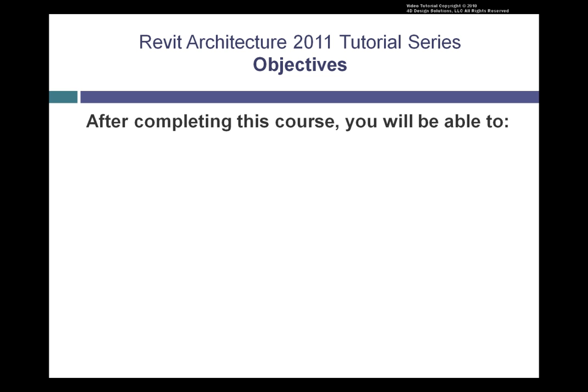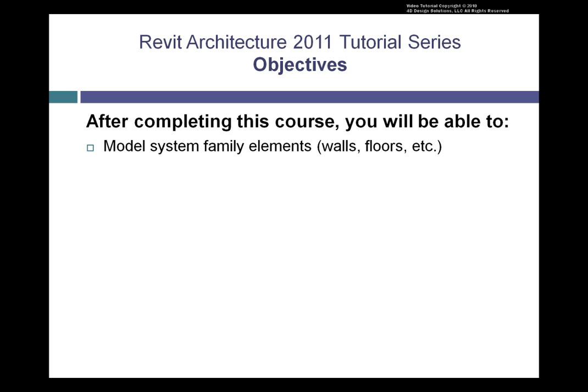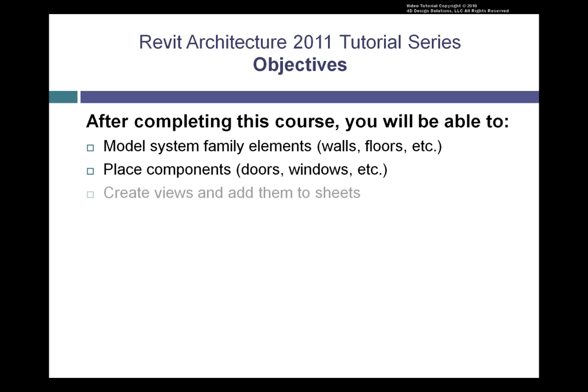After you have completed this entire course, you'll be able to model all of the elements that form the basis of a building model, including the system family elements that form the building shell and core — walls, floors, roofs, and so on. You'll also learn how to place other building components such as doors and windows, and how to modify components to create your own custom components. You'll learn how to create views such as plans, elevations, and sections, and place those views onto sheets, and how to control the appearance of those views so that they conform to your office standards.